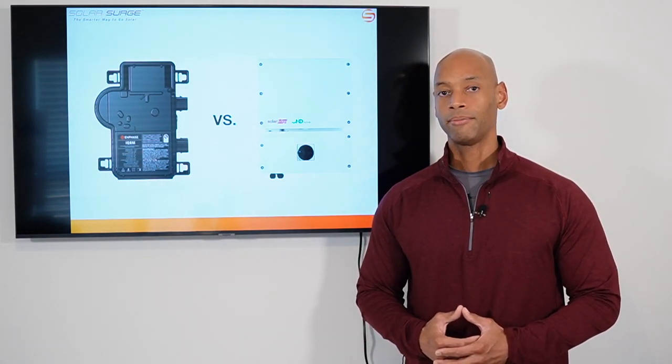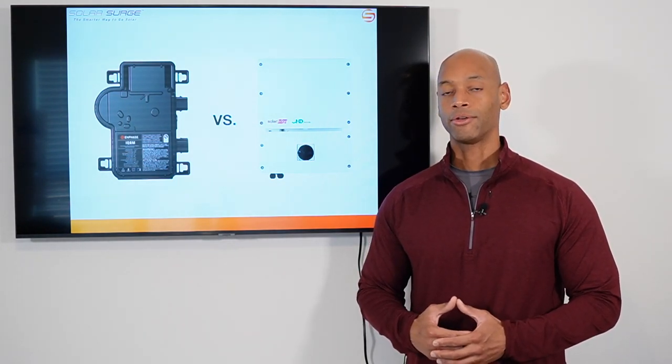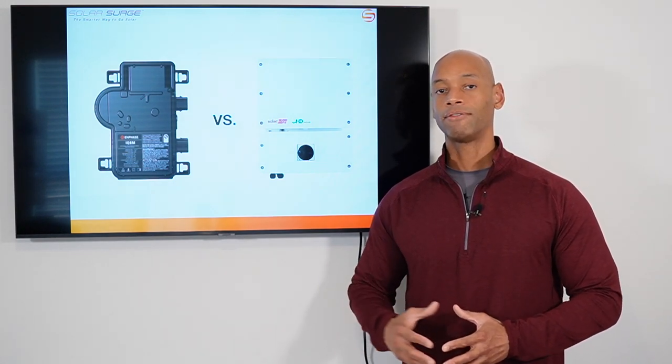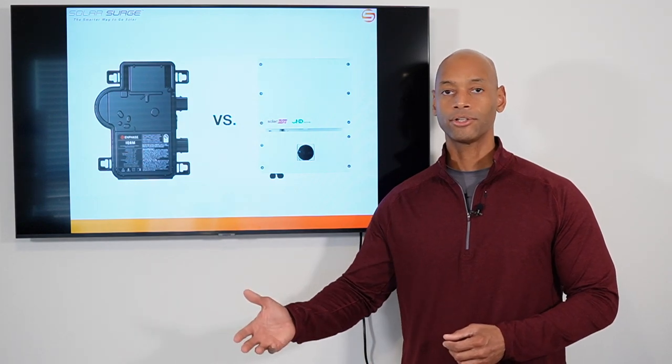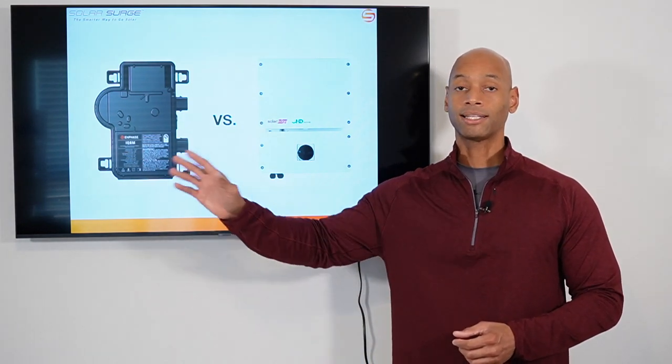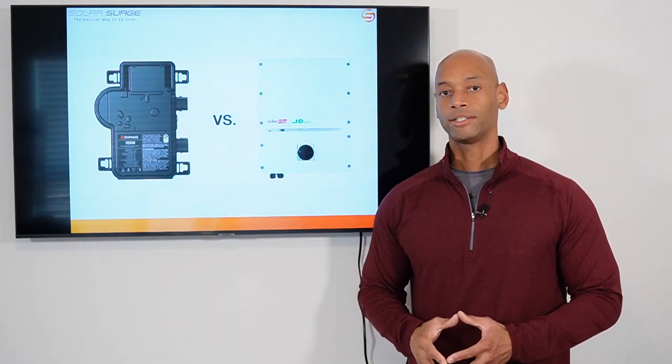And it converts it into, here in the US, 240 volts alternating current power, which is what the electric grid is wired for, what our homes are wired for. So the AC power coming off of your solar inverter is then usable and it can be fed into your circuit breaker panel or fed directly back out to your meter if you're going to just do straight sell back to the power company.